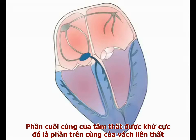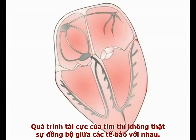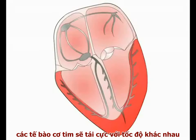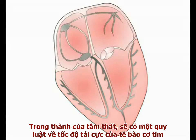The final piece of muscle to depolarise is the upper part of the interventricular septum, and again, this occurs by movement of current from left to right. Cardiac repolarisation is not truly propagated between cells. However, cardiac myocytes repolarise at different rates depending on their anatomical location within the heart. Within the ventricular wall, there is a gradient in the rate of cellular repolarisation.